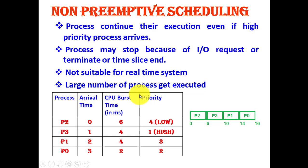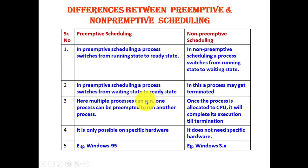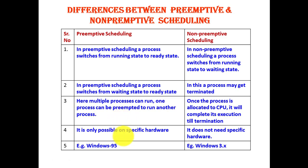Now let us understand the differences between preemptive and non-preemptive scheduling. In preemptive scheduling, a process can switch from running state to ready state, or from waiting state to ready state. Multiple processes can run — as in the earlier example where P0 was interrupted and another process executed. To enable preemptive scheduling, specific hardware is required, and this type of scheduling was used in Windows 95.